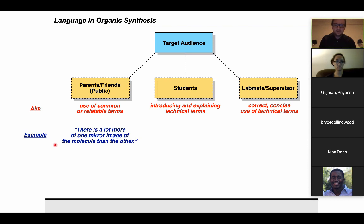You might be giving the following statement to a member of the public. If we're describing something that happened in one of our publications, you could be saying there's a lot more of one mirror image of the molecule than the other. And this is describing a particular situation in organic synthesis, which if we were describing to a student, it might be more technically accurate to say there's an enantiomeric excess of 90%, meaning there's a 95 to 5 enantiomeric ratio. And here, this is important because now we're introducing the technical terms and we're also relating them to one another. So the students becoming more comfortable using those terms. Whereas if we're interacting with a lab mate or supervisor, we want to save time and we also want to demonstrate that proficiency. So we'll say it's 90% EE and that's the end of the story.